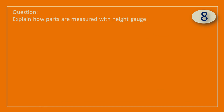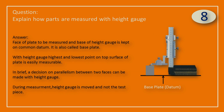Question: Explain how parts are measured with a height gauge. Answer: The face of the plate to be measured and the base of the height gauge are kept on a common datum, also called the base plate. With the height gauge, the highest and lowest points on the top surface of the plate are easily measurable. In brief, a decision on parallelism between two faces can be made with a height gauge. During measurement, the height gauge is moved and not the test piece.